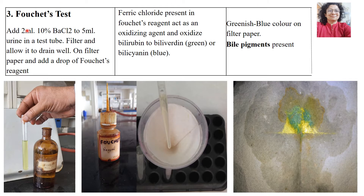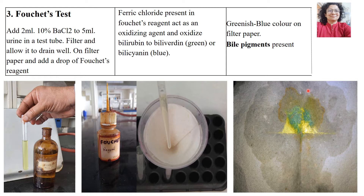The third test is Fouchet's test. We take 5 ml of urine sample and add 2 ml of 10% BaCl₂. The addition of BaCl₂ creates precipitates which are filtered and allowed to drain well onto filter paper. On the filter paper we add 1 drop of Fouchet's reagent. The principle is that ferric chloride in Fouchet's reagent acts as an oxidizing agent and oxidizes bilirubin to biliverdin, giving a greenish blue colour.